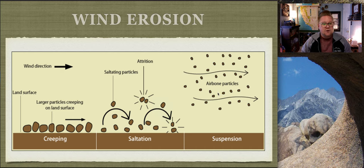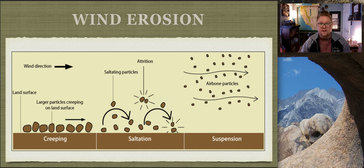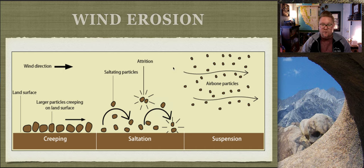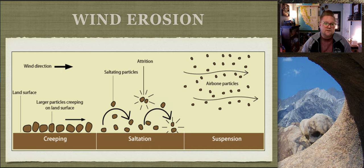There's definitely a size difference between what moves through creeping, saltation, and suspension. A common question: what if very intense wind causes material that otherwise would creep to now saltate? The answer is yes, absolutely - this reflects the velocity and energy of the wind. Grain size determines how much energy is needed to move material.